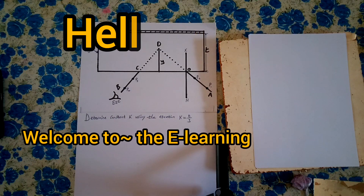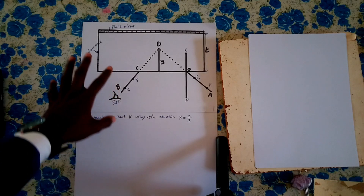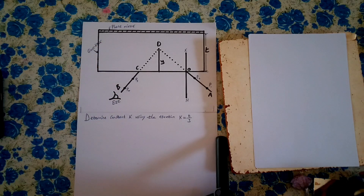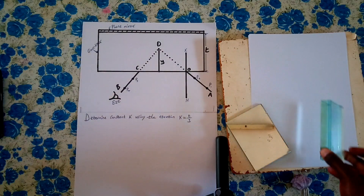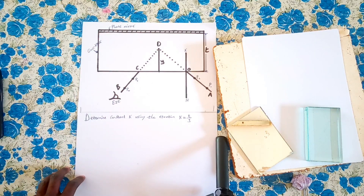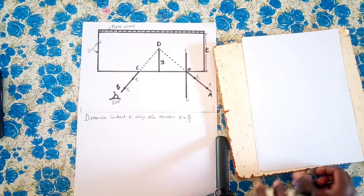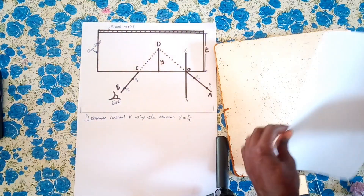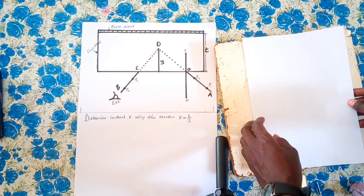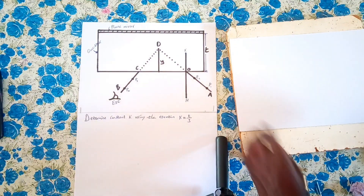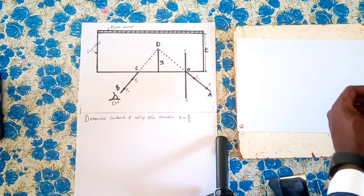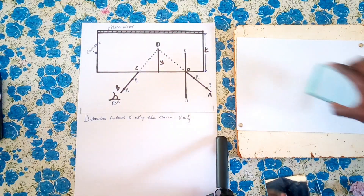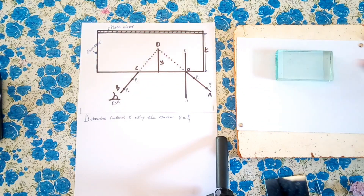Hello viewer and welcome to the e-learning classroom. Today we want to look at this experiment. We have a plane mirror and a glass block. The setup is arranged as it appears. Our interest is to find the refractive index of the glass block. We first arrange the setup — we can stick the papers with office pins and stick the plain papers on the softboard, then we place the glass block on our setup.